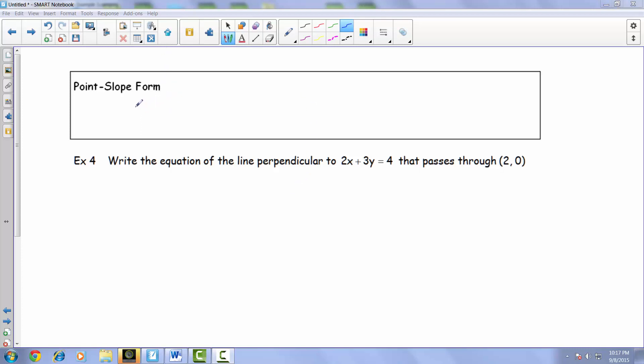Point-slope form is simply the equation y minus y₁ equals m times x minus x₁. Though there are different y's and x's going on here, our x₁, y₁ is simply a point, and our m is our slope.